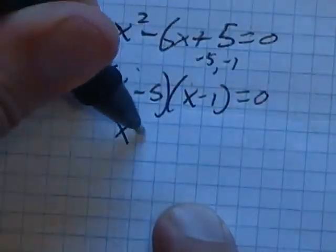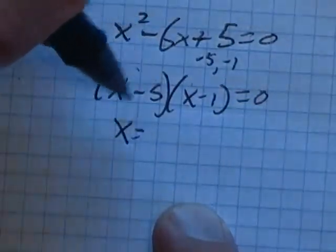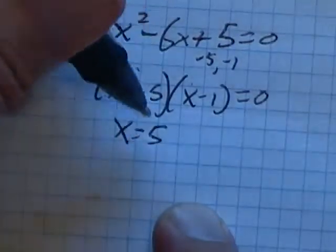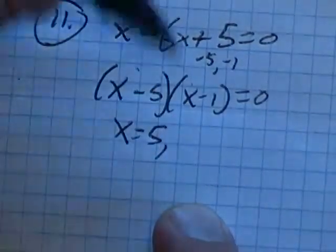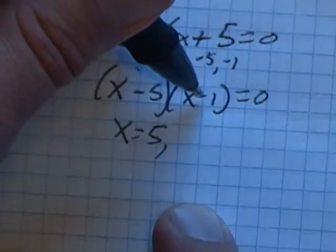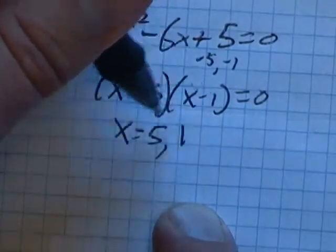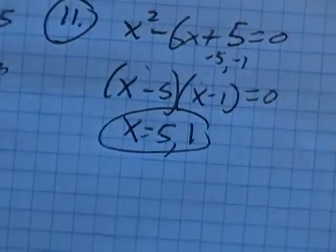This times this is 0, which means that either this factor has to be 0, so x would be 5 (5 - 5 = 0), or this factor makes it 0, which would be 1 (1 - 1 = 0). So there are my answers, my solutions.